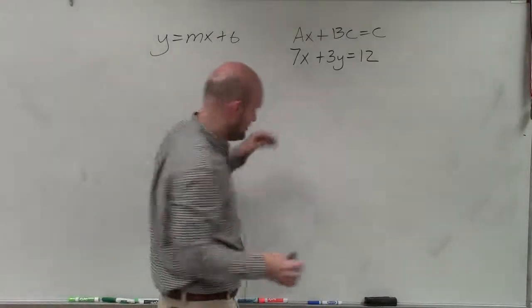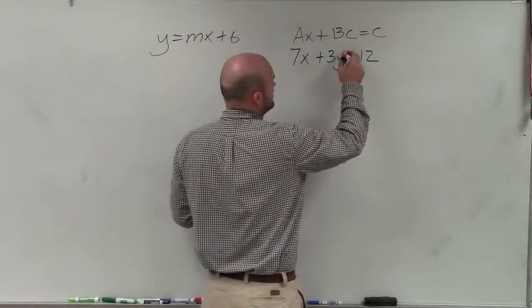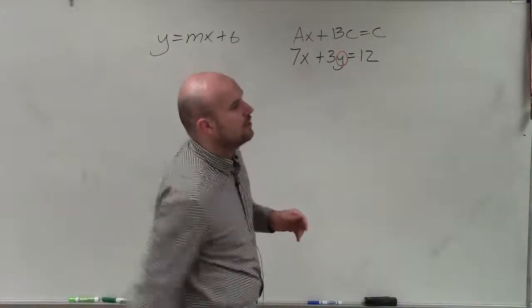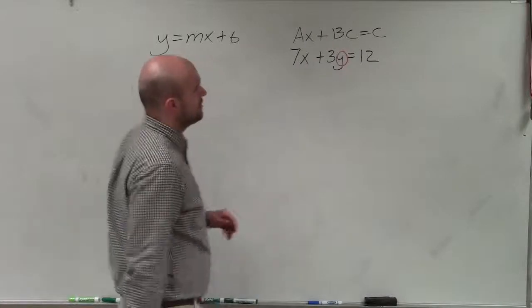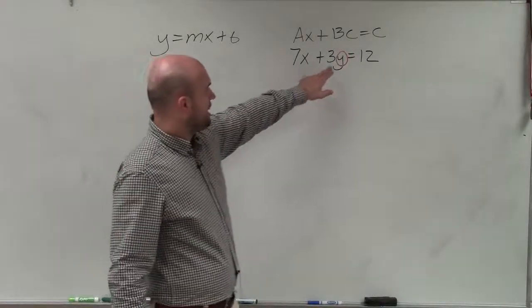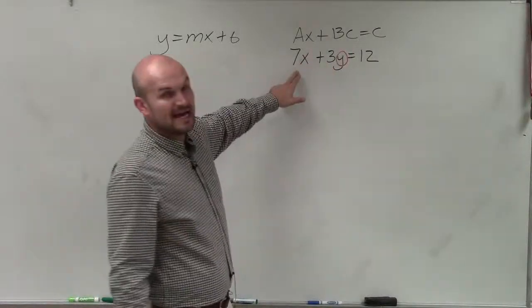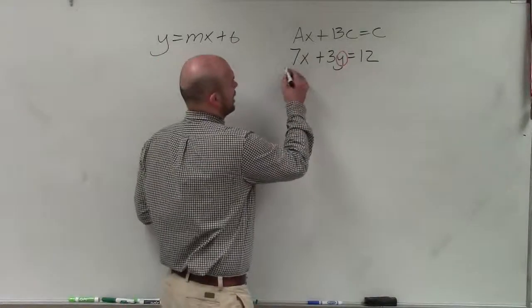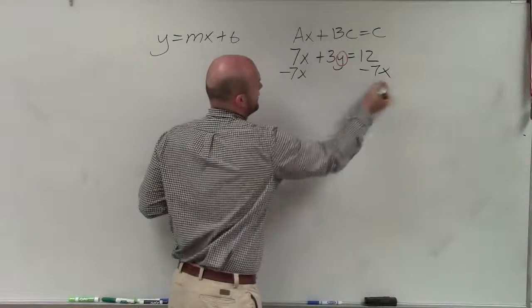So to do that, I'm going to circle my y and just undo everything that is happening now to my y. So we always want to follow our reverse order of operations, meaning here's my y. My y is being multiplied by 3 and it's being added by 7x. So to undo these operations, I always want to undo whatever I'm adding or subtracting to first.